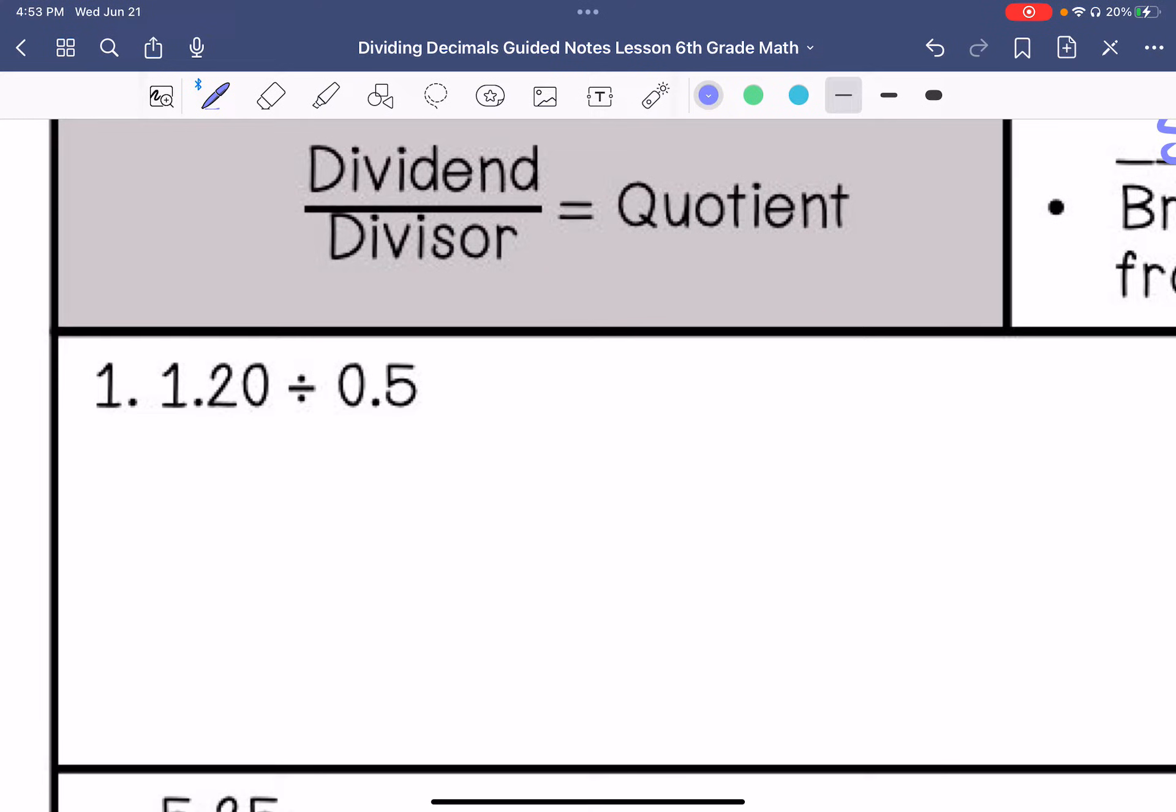Let's do number 1. 1.20 divided by 0.5. I'm going to put the divisor on the outside, the dividend inside the house. Move the decimal point over once. I've got to do that to the dividend. So now I have 5 on the outside and 12. 5 cannot go into 1. It can go into 12 two times, which is 10. 5 goes into 24 four times. We bring that decimal point directly up. So my answer is 2.4.